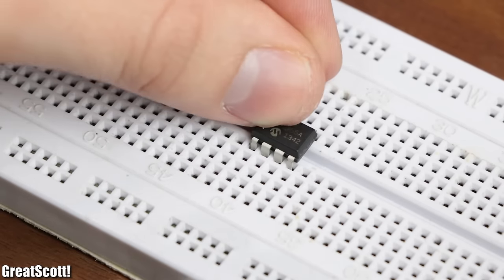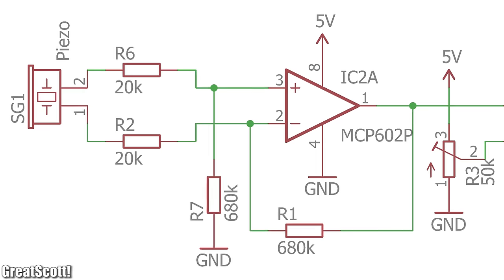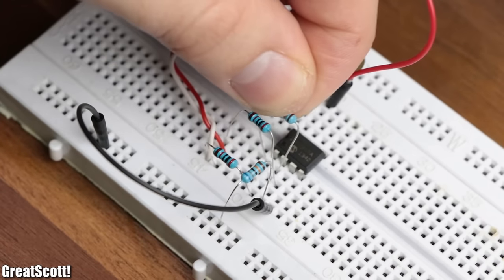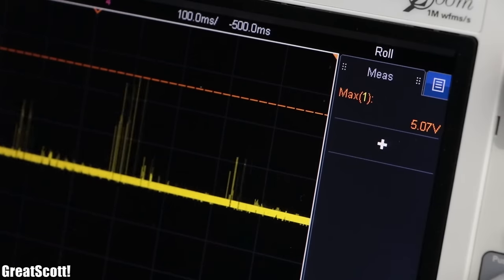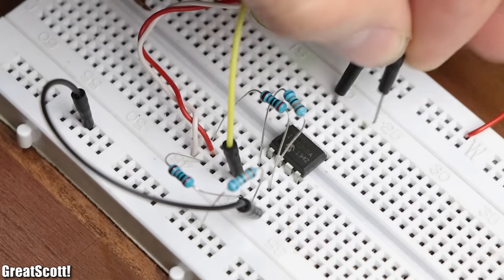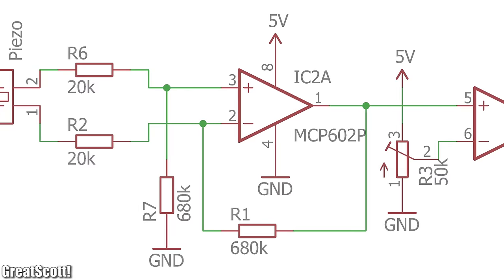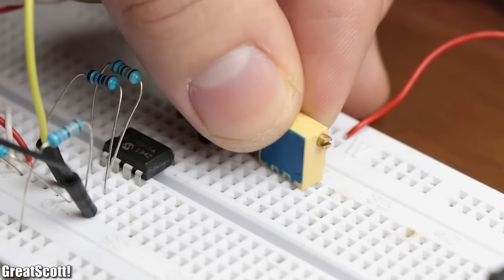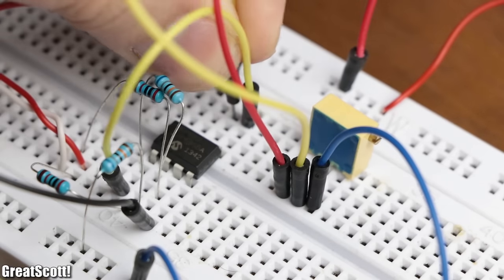To solve that, I used an MCP602 op-amp in a differential amplifier configuration with four resistors to reach a gain of 34 and thus achieve output voltages of around 4 to 5 volts.